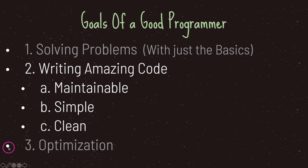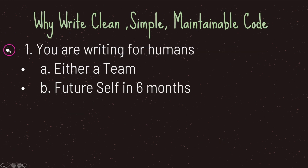The last thing you should focus on is optimization, however we will not be looking into that in this series. Now why is it important for programmers to write clean, simple, and maintainable code? Well, you are writing for humans — that's the most important reason — because either other people on your team have to read your code, or when you come back to it six months or a year later you're not going to remember exactly what you wrote.